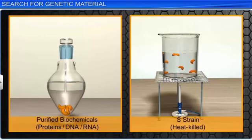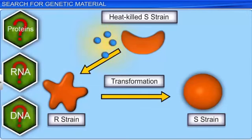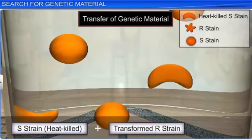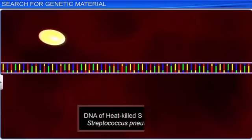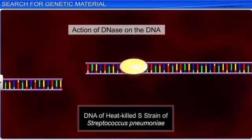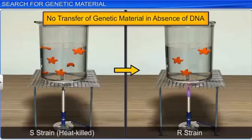For this, the scientists first purified biochemicals such as proteins, DNA, and RNA, or ribonucleic acid, from the heat-killed S strain bacteria. They did so to identify the biochemical responsible for transforming the live R strain into S strain bacterial cells. Through their experiments, they discovered that it was the DNA from the S strain bacteria that had transformed the R strain bacteria. They also found that digestion of the DNA of heat-killed S strain with DNase inhibited transformation.